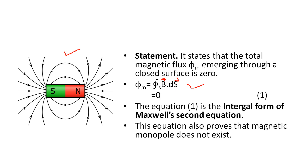This equation also proves that magnetic monopoles do not exist. Because if there is only one pole emitting lines of force, there would be nowhere for them to enter. So there must be two poles — one to emit the lines of force and another to receive them. Therefore, magnetic monopoles do not exist; this is the significance.